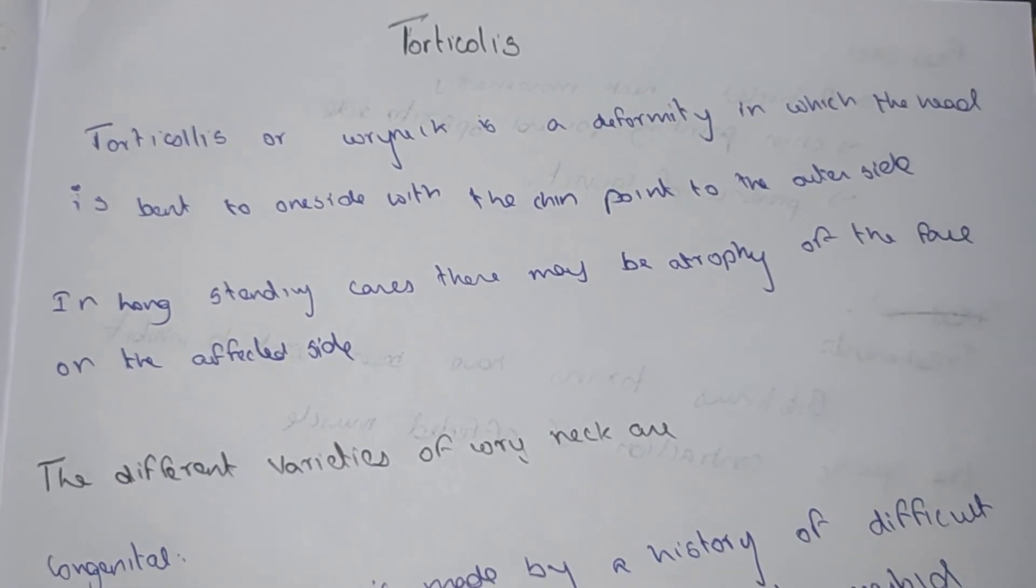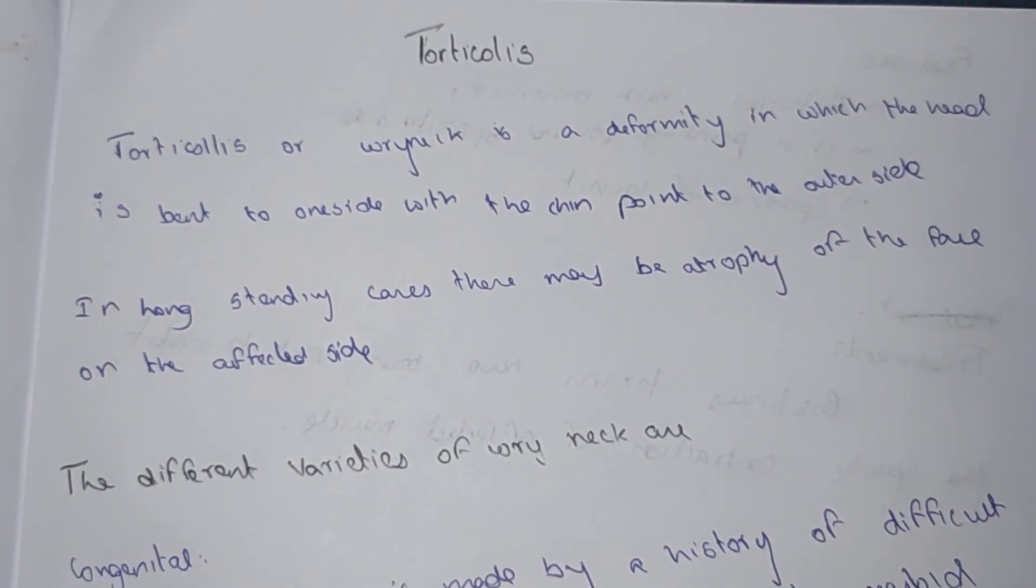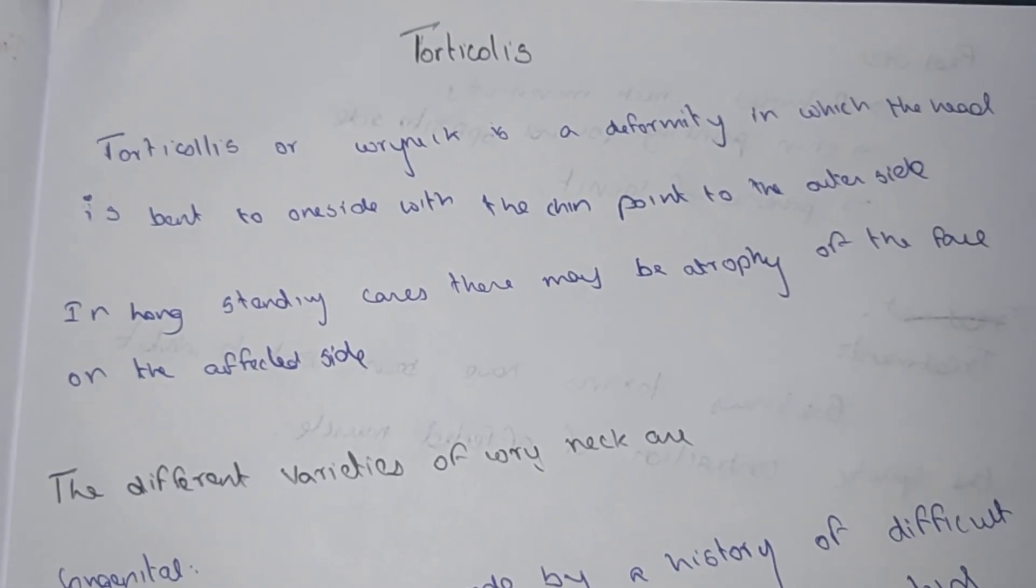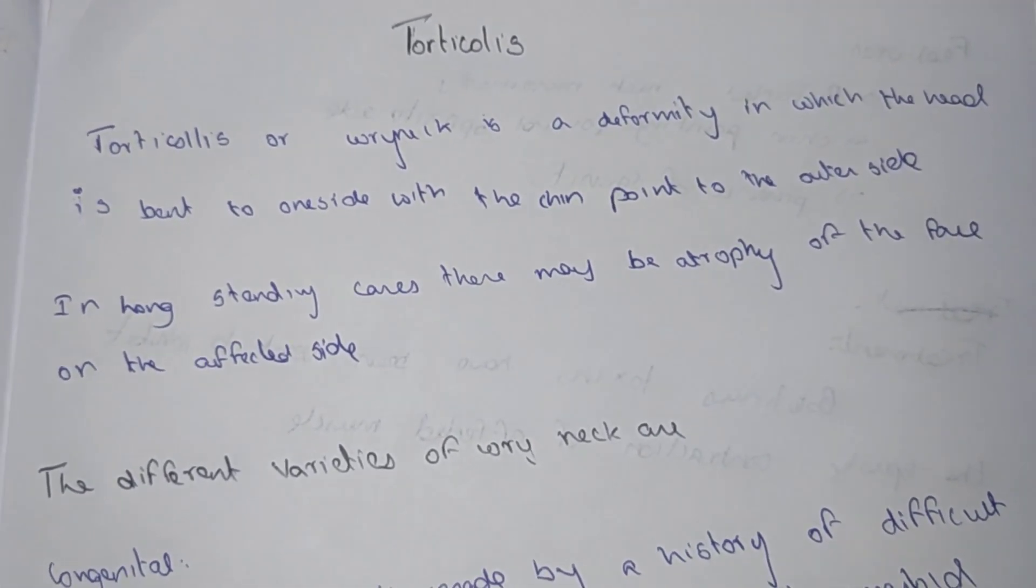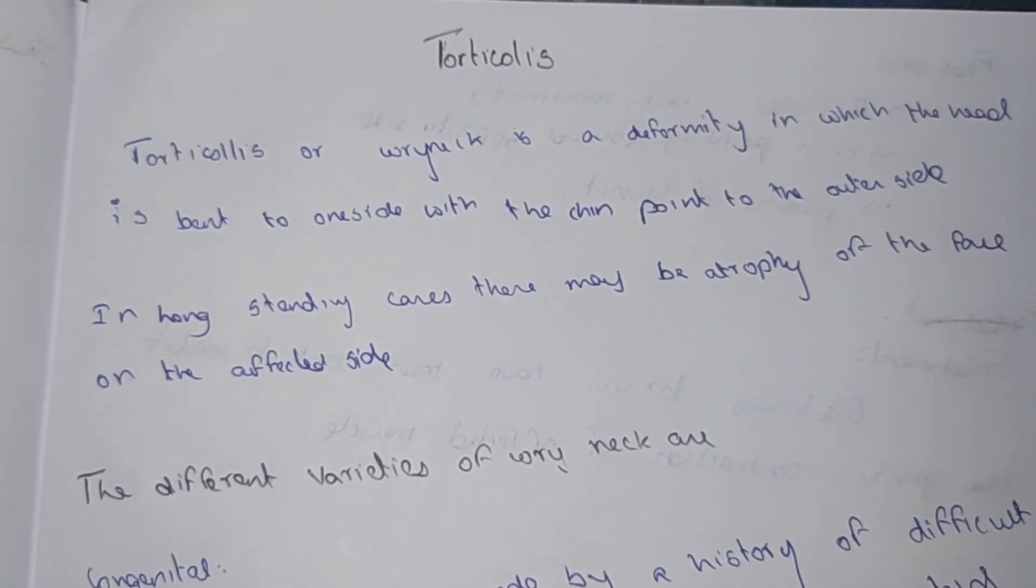Torticollis is a wry neck. It is a deformity in which the head is bent to one side and the chin points to the other side. When we are straight, the chin is at the right point.